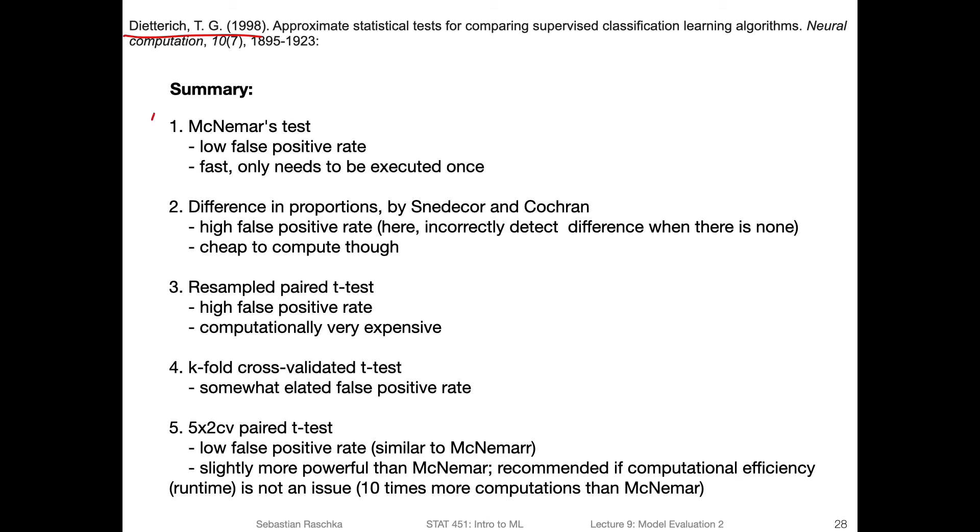McNemar's test, we talked about that before. This is actually not an algorithm comparison test, it's just a model comparison test, but it's interesting to list here because based on the study on empirical experiments, Tom Dietterich found that it has a low false positive rate. And it's also fast to run, which is nice if we compare two models to each other.